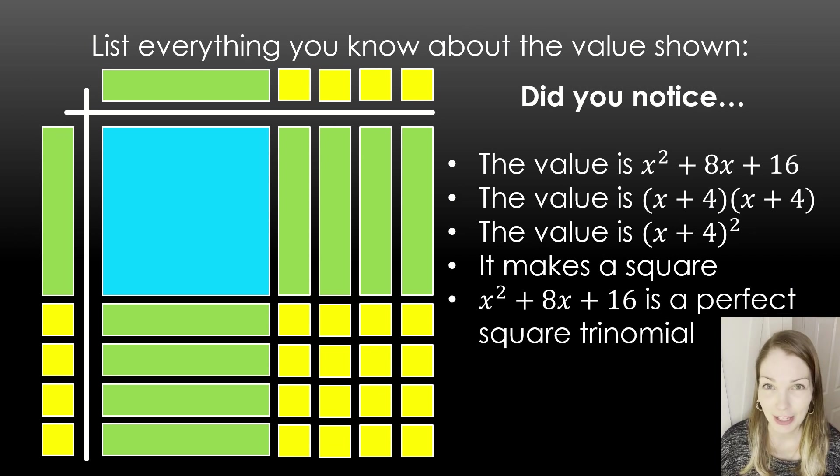And it's a perfect square trinomial. So that's important to talk with students, especially as we move into completing the square. That idea of a perfect square trinomial is important to the concept. So a perfect square trinomial here, it has the same two factors. x squared plus 8x plus 16 is a perfect square trinomial.